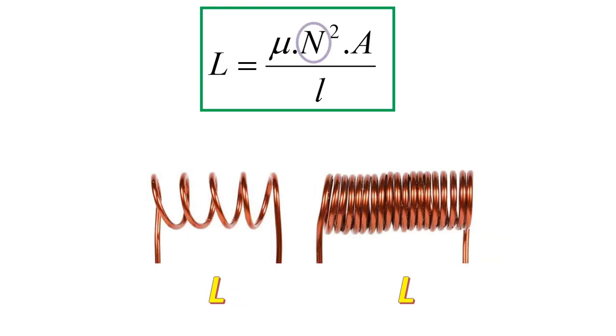Let's have a look at the change in the inductance value of the coil with the number of turns. Inductance value decreases when the number of turns decreases like the coil on the left, while the inductance value increases when the number of turns increases like the coil on the right.